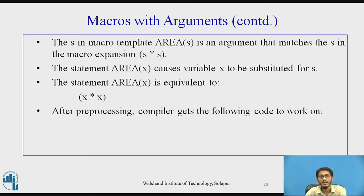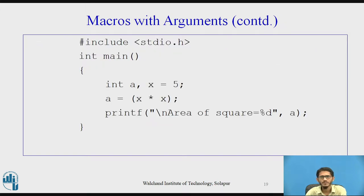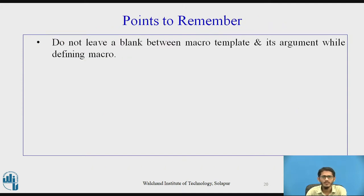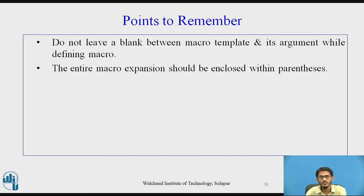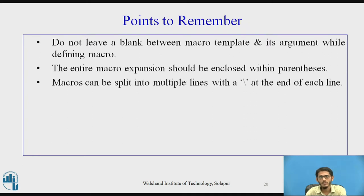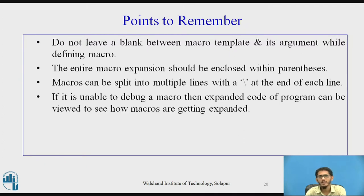After preprocessing, the compiler will get the code with macros replaced by their expansions — that is, `a = x * x` instead of area(x). Some points to remember: do not leave a blank between the macro template and its argument while defining a macro, as this will prevent the correct expansion. The entire macro expansion should generally be enclosed within parentheses. Macros can be split into multiple lines using a backslash at the end of each line. If unable to debug a macro, you can view the expanded code to see how macros are getting expanded.